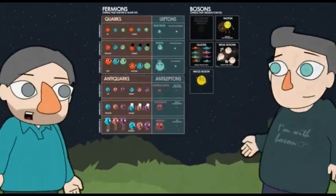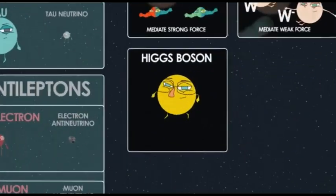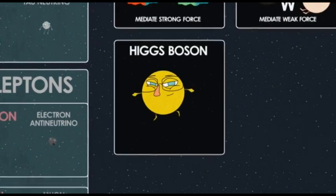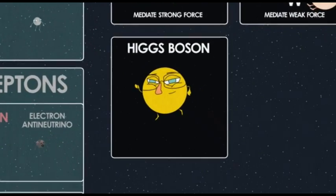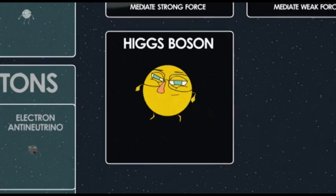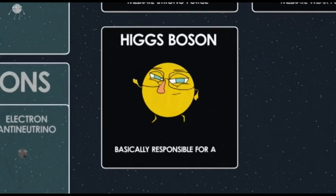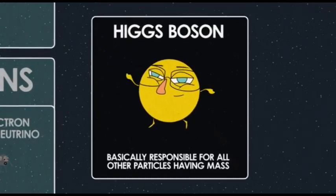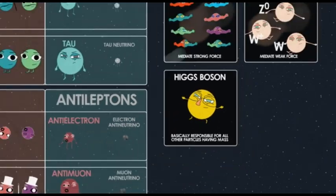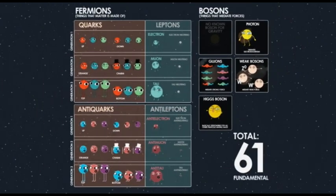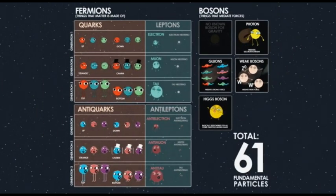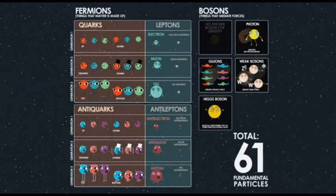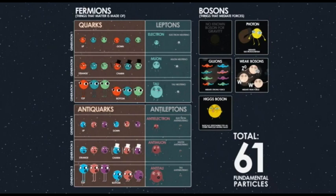There's the Higgs boson — which everyone has heard of. The Higgs was the last particle to be discovered, and it is its own anti-partner, so there's just the one. It's basically responsible for all the other particles having mass. So the total is 61 — and why 61? That's just untidy. This cannot be right, and it is completely insane.